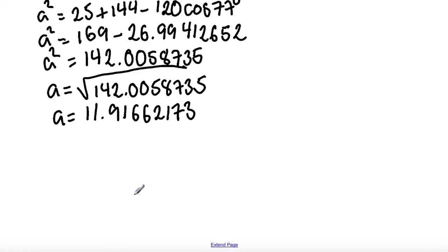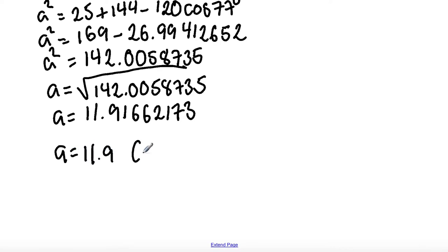Rounding to one decimal place, therefore A is equal to 11.9 cm (1 d.p.).